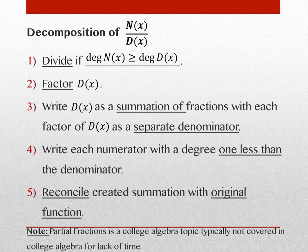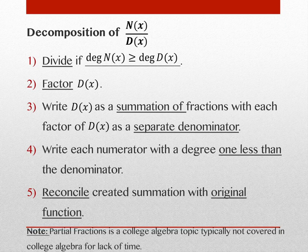Our fractions are going to look like n(x) over d(x). The first step in this process is to divide if the degree of the numerator is greater than or equal to the degree of the denominator. The ones we're doing as examples don't have this feature, but if they do, you've seen this before — you're going to do long division. That's step one.